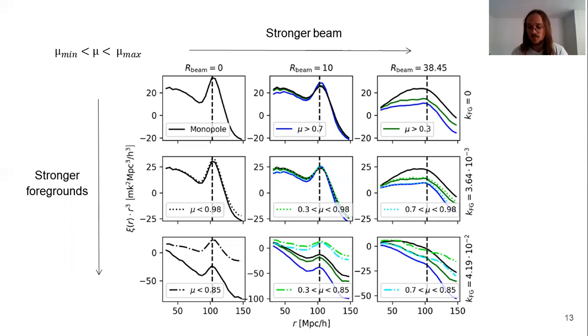For most of the cases, BAO can be recovered, and with the mu cuts the signal is sharper. But when we consider a strong value of R beam, it becomes more subtle, and this will be one of the main results of this paper.